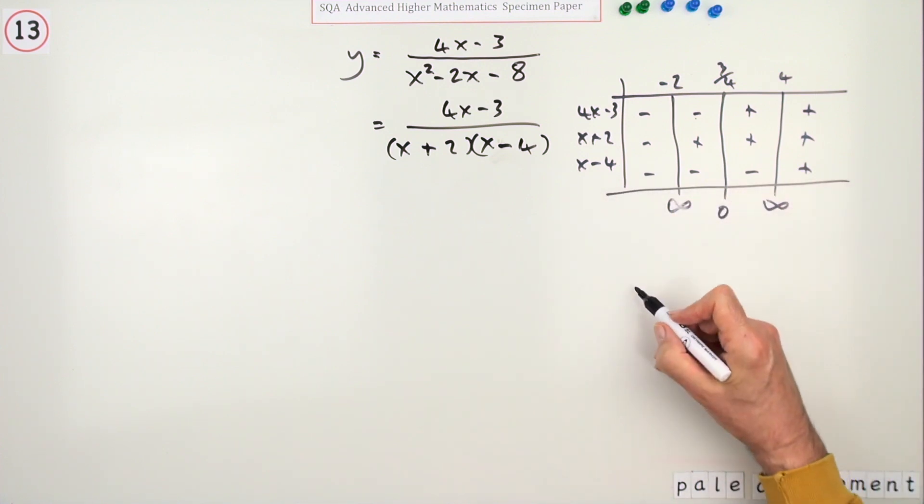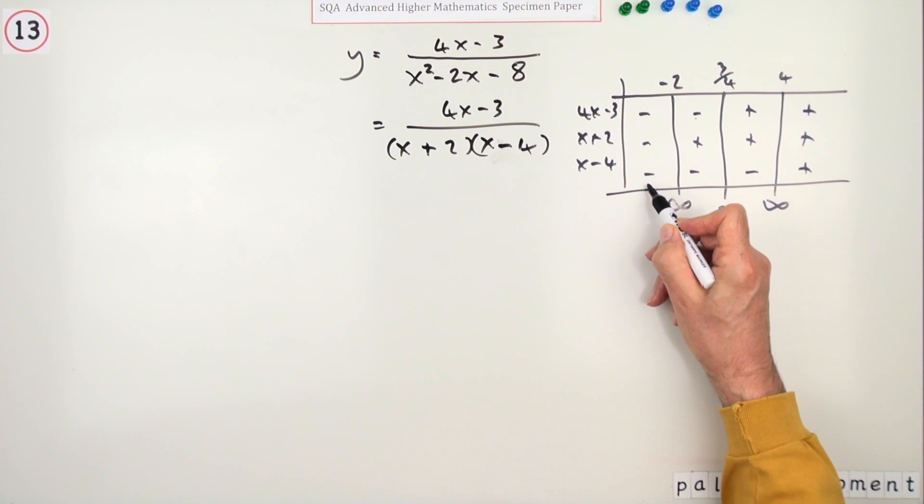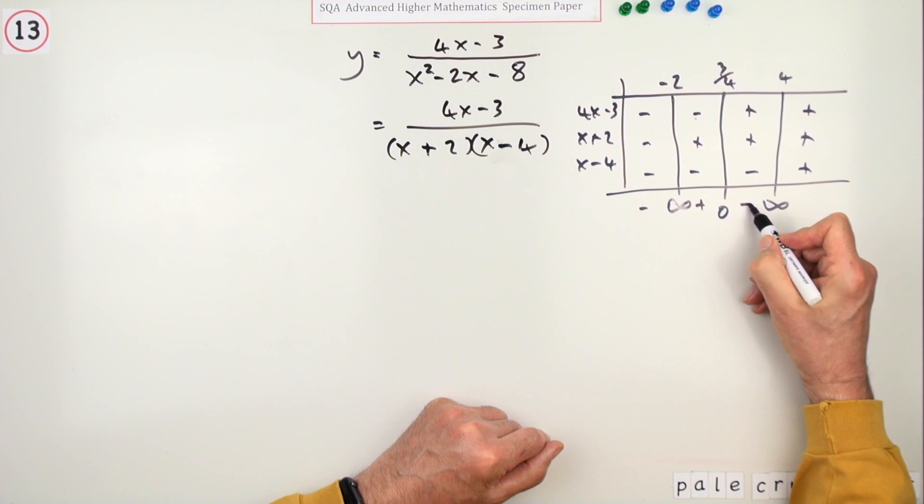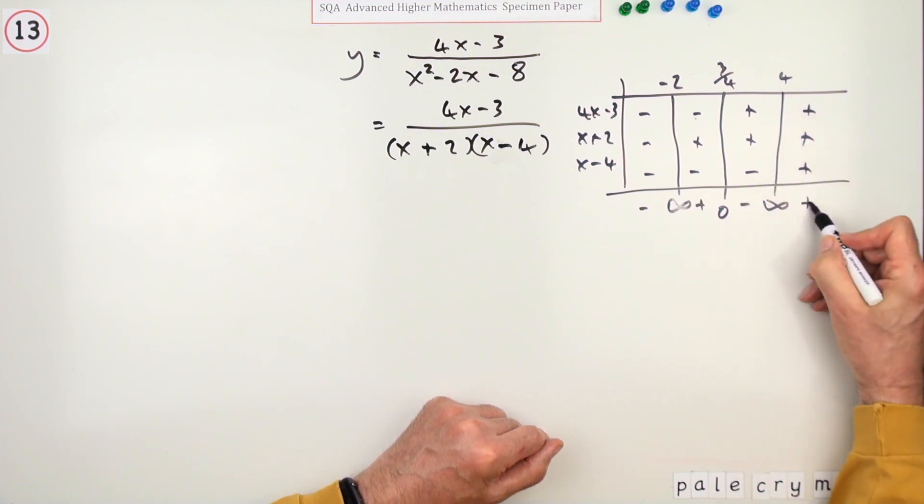And that answers it. So what happens at these asymptotes and also where it crosses the axis? These three negatives multiplying and dividing gives a negative, that gives a positive, that's got a spare negative, and that's positive.